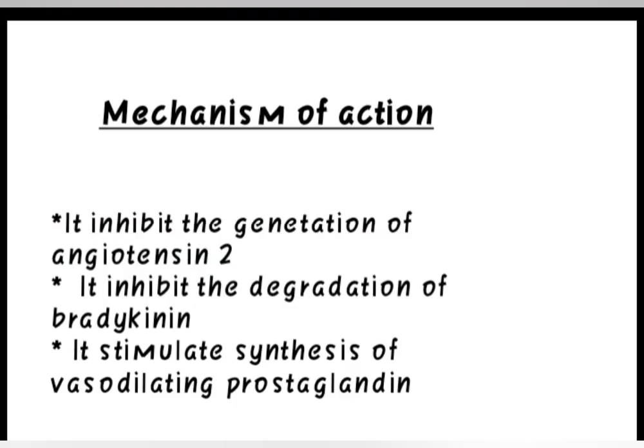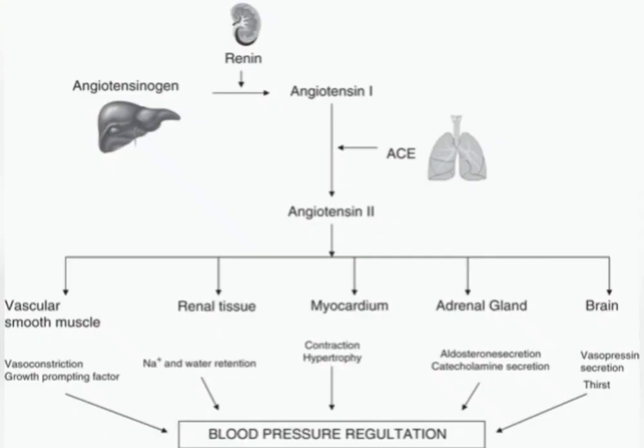Mechanism of action: ACE inhibitors inhibit the generation of angiotensin 2, resulting in dilatation of arterioles and decrease in peripheral vascular resistance, thereby decreasing blood pressure. They decrease aldosterone production, decrease sodium and water retention, and again result in decreased blood pressure. They also decrease sympathetic nervous system activity and inhibit the degradation of bradykinin.